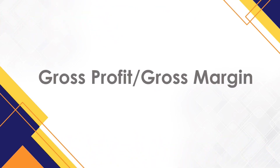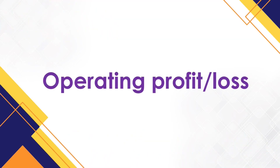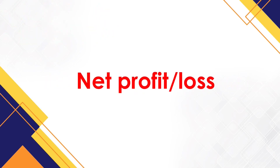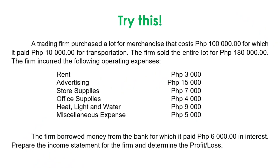Next is gross profit, which is at times referred to as gross margin that we have previously studied. We also have operating profit or loss — this is gross profit less operating expenses. And lastly, net profit or loss is the operating profit plus other income less other expense. I believe you are now ready to apply these terminologies.